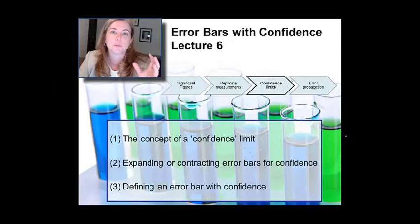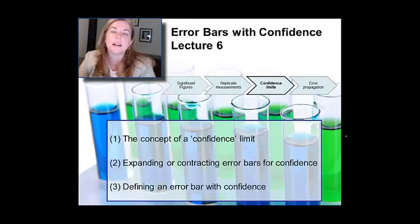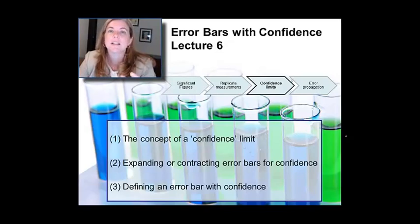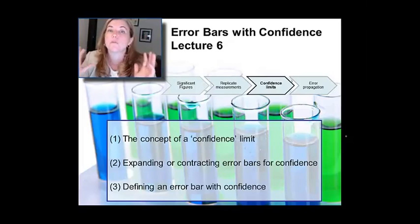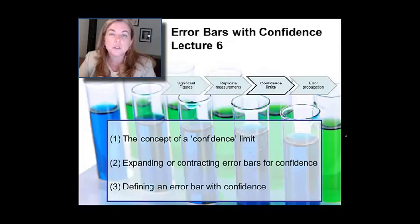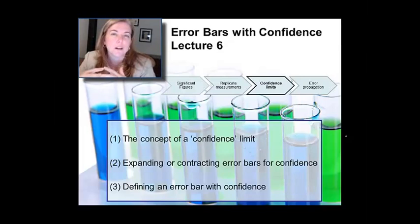It might be that you want to give a really big error bar to be really sure that you capture all of the future measurements that might occur. Or maybe you want to give a smaller error bar. When you describe and provide an error bar, you need to tell the audience: this is plus or minus, and in future measurements, I am X percent confident that they will fall in the range I've given you. That's basically defining error bars with a confidence limit.